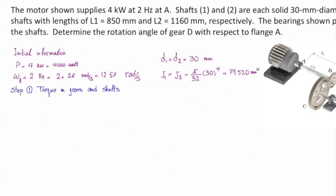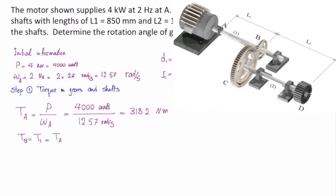So now, we can determine how much is torque in shaft 1. How much that would be? Torque is power divided by angular velocity. Let me plug the values here. With the appropriate unit, the torque in shaft 1 will be 318.2. How much would be the torque in the gear at B? Same.